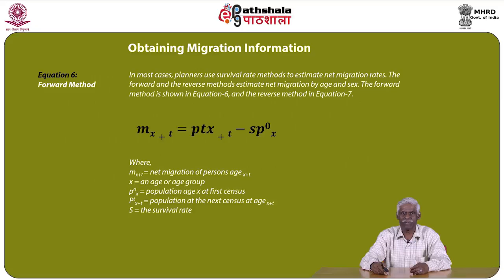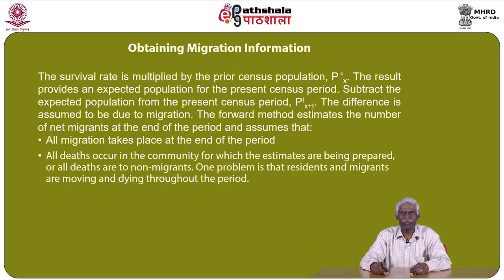The forward and reverse methods estimate net migration by age and sex. The forward method equation is: M(x+t) = P(t)(x+t) − S × P⁰(x), where M(x+t) is net migration of persons aged x+t, P⁰(x) is population at the first census, P(t)(x+t) is population at the next census at age x+t, and S is the survival rate. The survival rate multiplied by the prior census population gives an expected population for the present census. Subtracting this expected value from the present census gives the difference assumed to be due to migration. The forward method assumes all migration takes place at the end of the period and all deaths occur in the community as non-migrants.